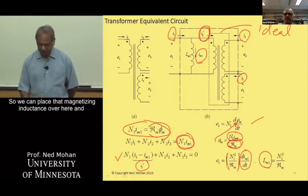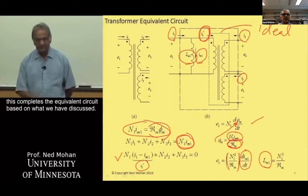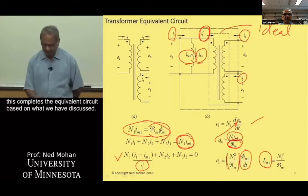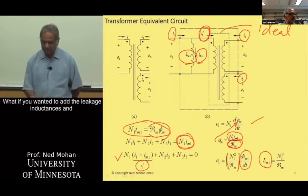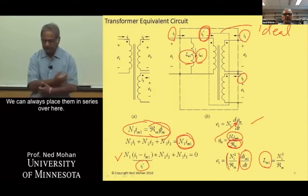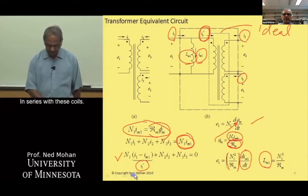This quantity in brackets is equal to the magnetizing inductance looking from side one. We can place that magnetizing inductance in the equivalent circuit, completing it based on what we have discussed. If we wanted to add leakage inductances and resistances of the coils, we can always place them in series with these coils.